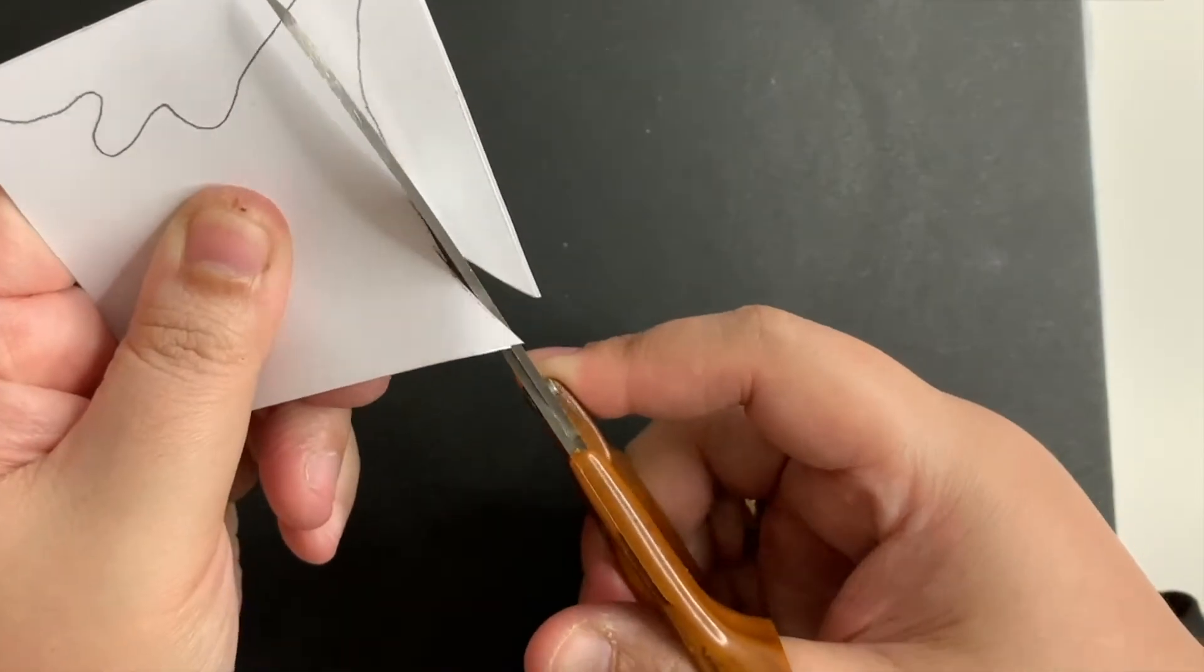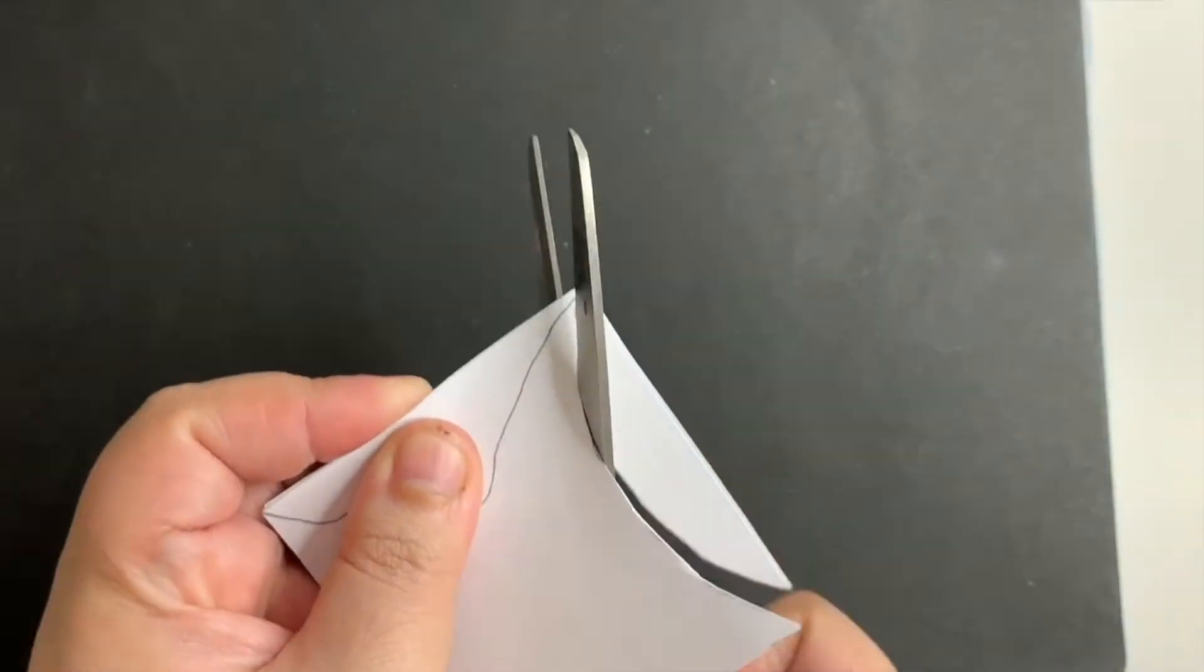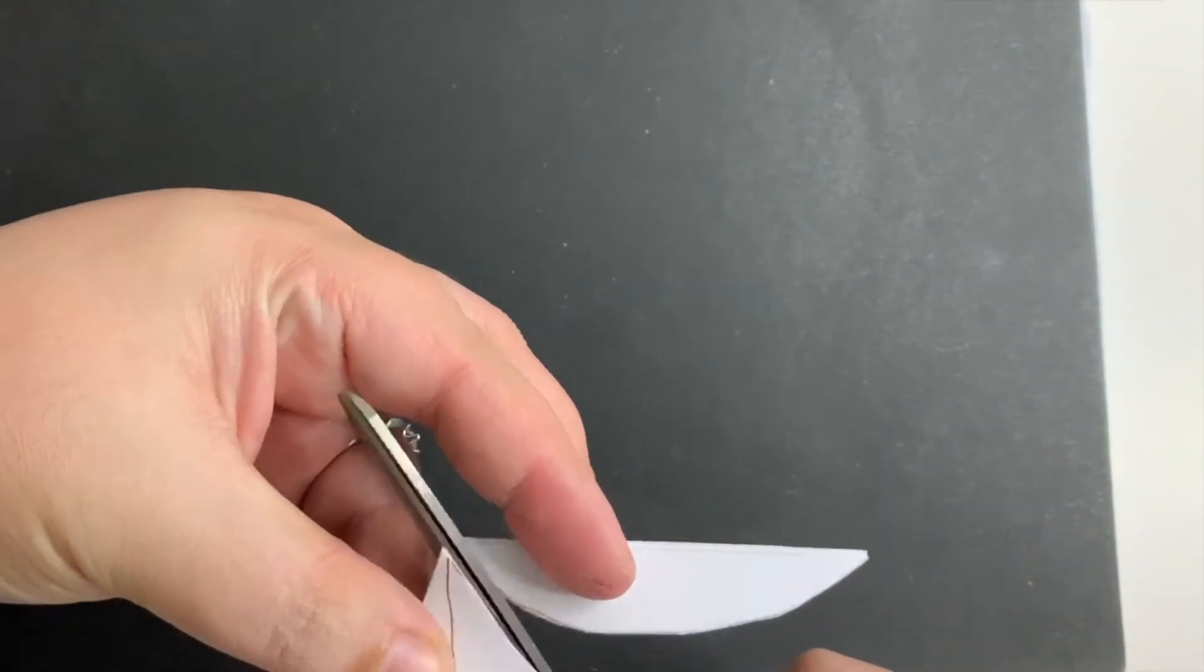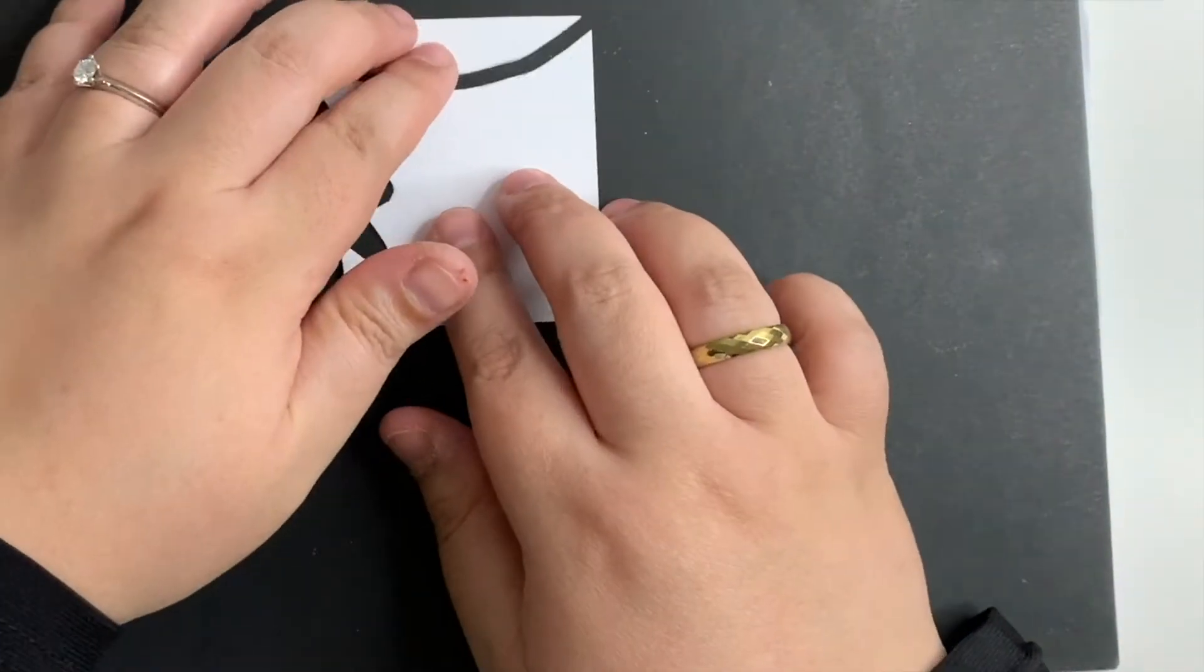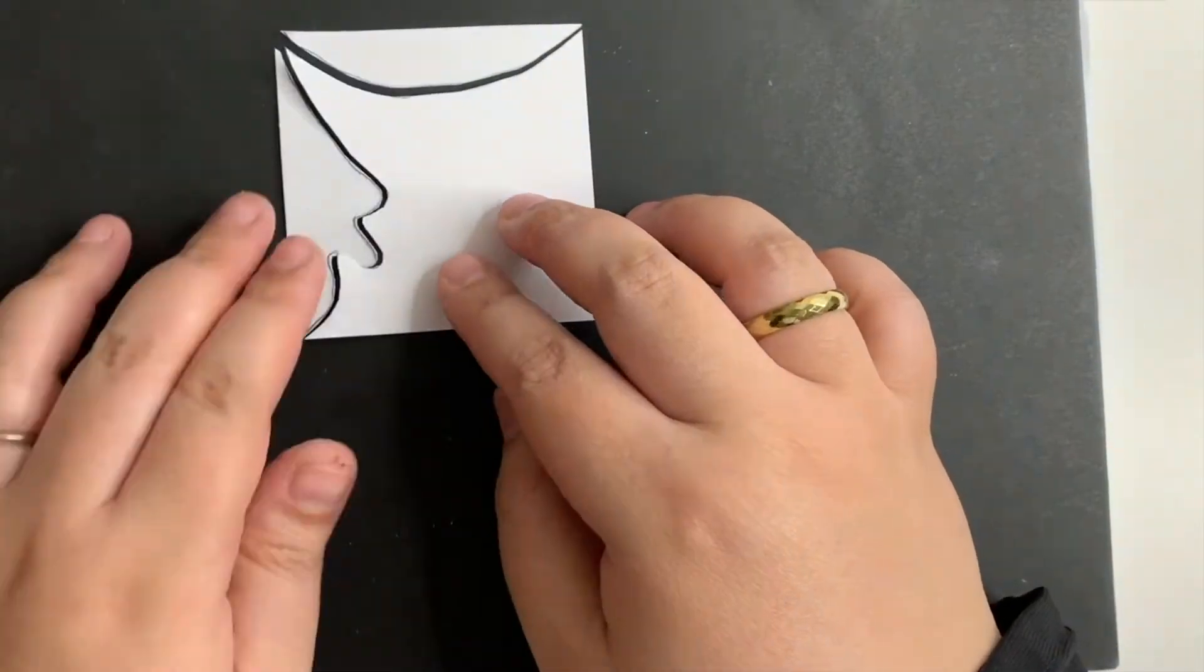These two lines should not overlap each other. Let's cut these shapes out. Do not throw any cutouts. We will be using them to attach to the other sides of the paper.